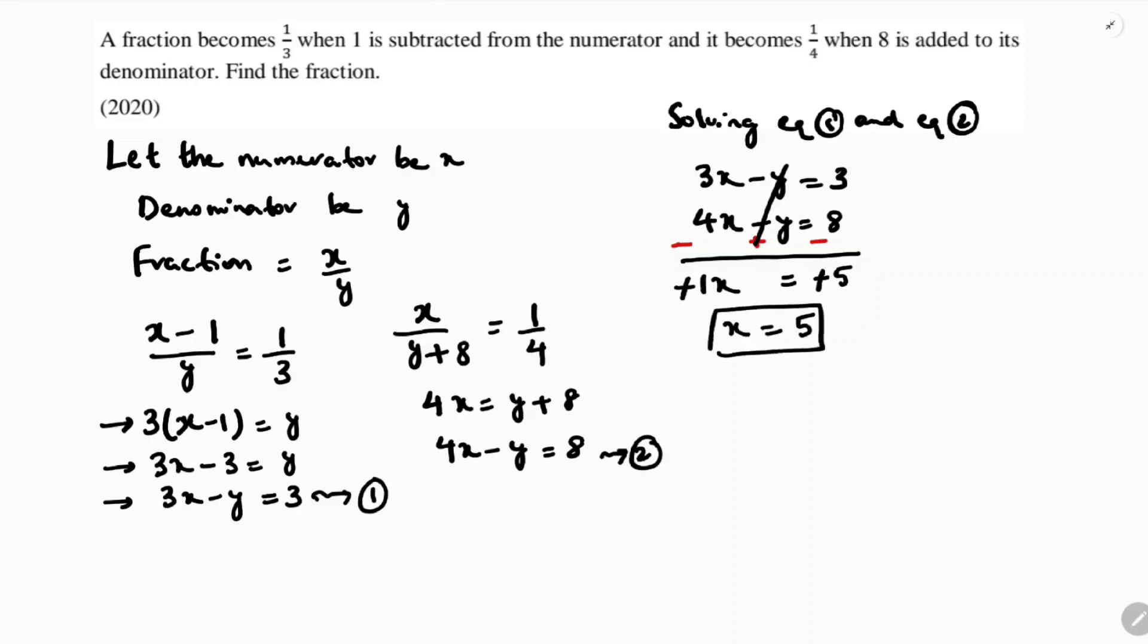Now this x value we can substitute in any one of the equations. So if we take the first equation, 3x minus y equals 3. 3 into 5 minus y equals 3. 3 times 5 is 15 minus y equals 3. 15 minus 3 equals y. 12 equals y.